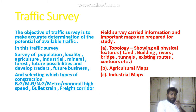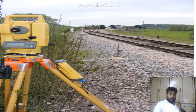Field surveys are carried out and important maps are prepared for study. First is the topology map, showing all physical features such as land, buildings, rivers, bridges, tunnels, existing routes, and contours. Second is the agricultural map, and third is the industrial map.